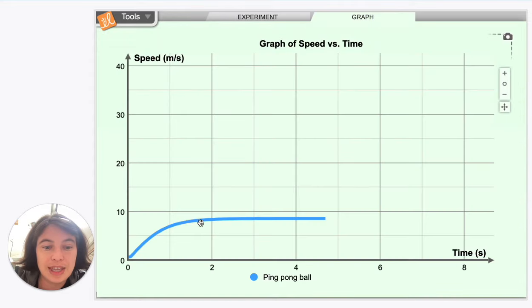And you can see that on the graph, where even though time is continuing to pass and the ball is continuing to fall, its velocity is no longer increasing. So its speed is sort of becoming constant.